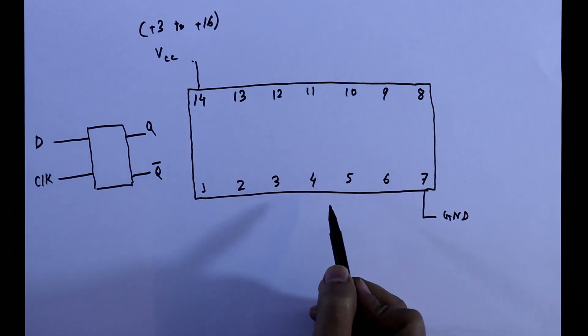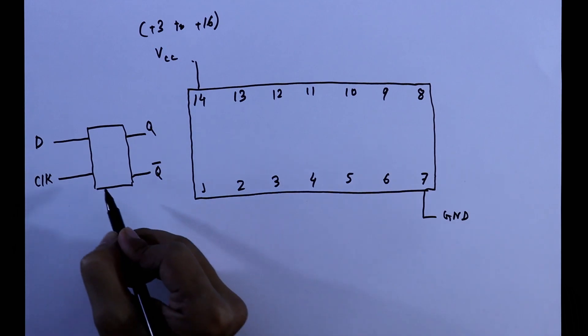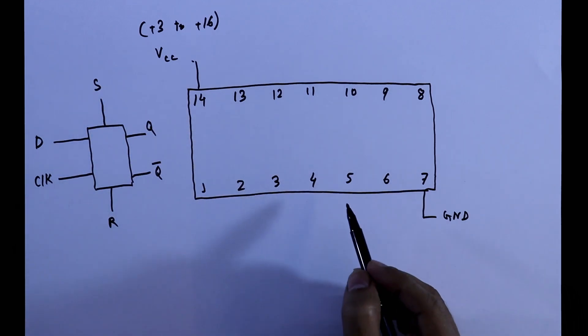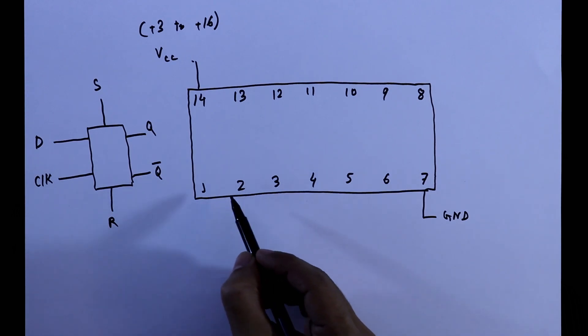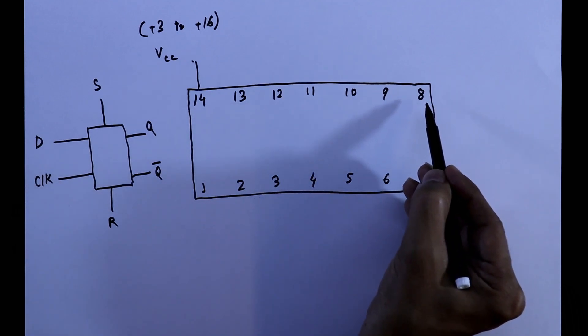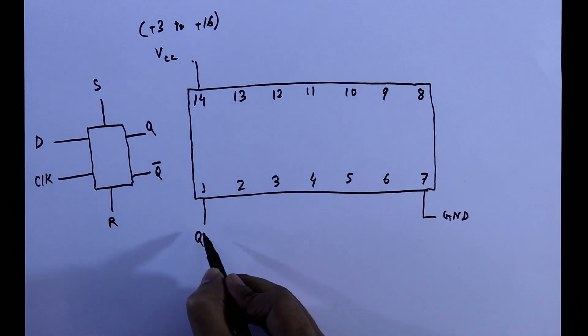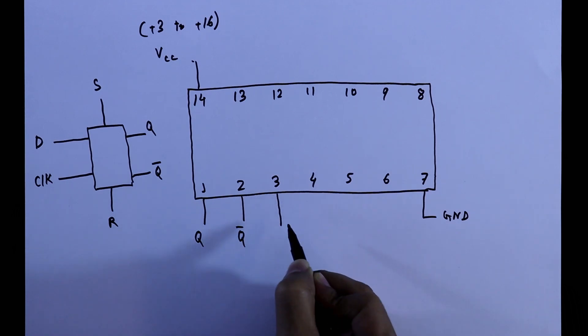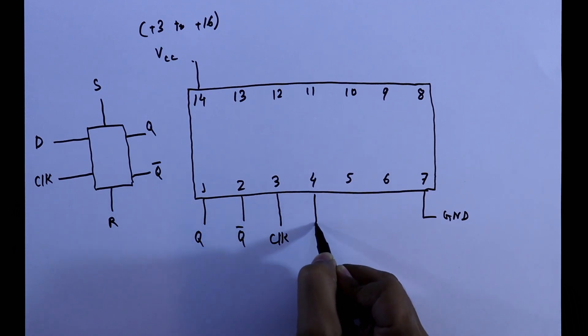But in this it has 6 pins, that is reset and set, these are another 2 pins. And this IC has 2 D flip flops. One D flip flop has this 6 pins and another with this 6 pins. This is the Q of first flip flop, then it is Q bar, clock, reset.